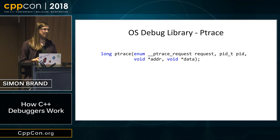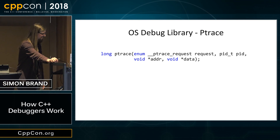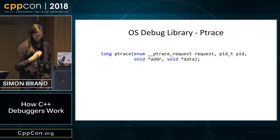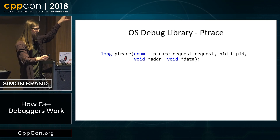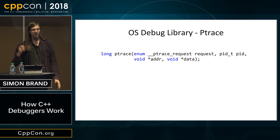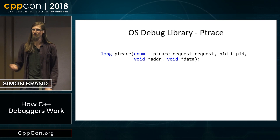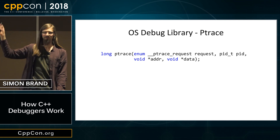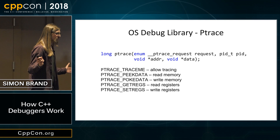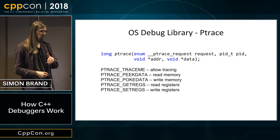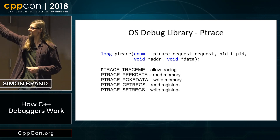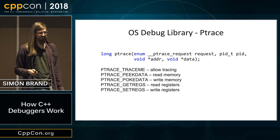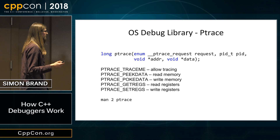This is ptrace. Everyone who's worked with debuggers — if you say ptrace, their face will just drop. It's one function: you pass it a request, a process ID, and then an address and data. Depending on what the request is, maybe it ignores the other two, maybe they mean something different. Things you can do include: say I want my debugger to be allowed to trace me, read and write memory, read and write registers. You just pass these enums into this function and it will do wildly different things. ptrace exists, it mostly does its job. There is a man page if you want to read more.